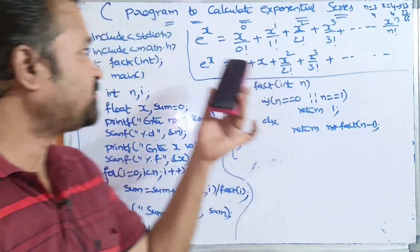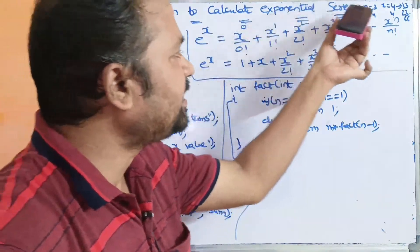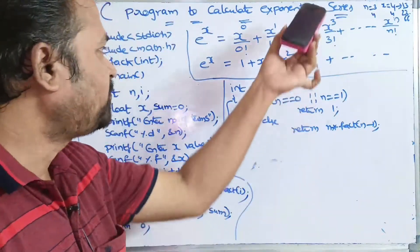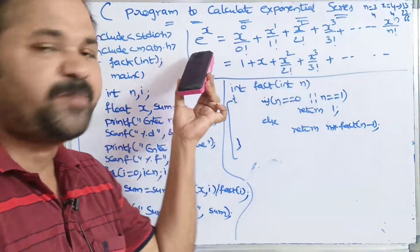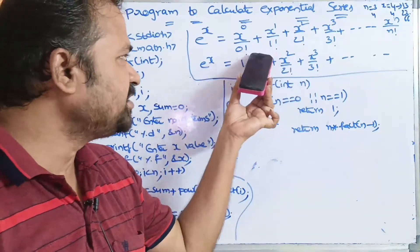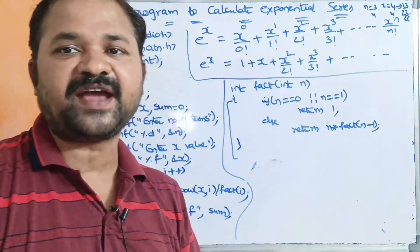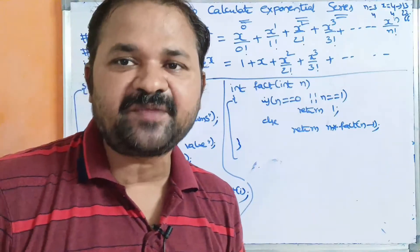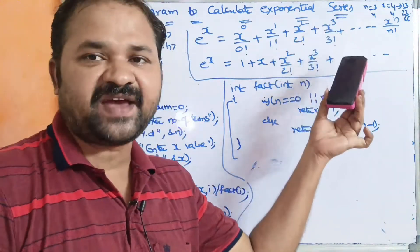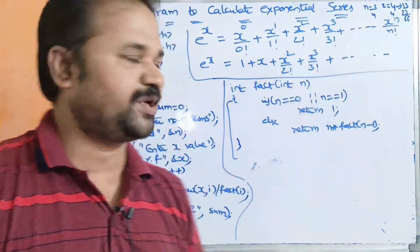Now let us see this program to calculate the exponential series. Exponential series means e power x is equal to x power 0 by 0 factorial plus x power 1 by 1 factorial plus x square by 2 factorial plus x cube by 3 factorial, and so on up to x power n by n factorial.